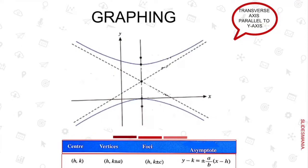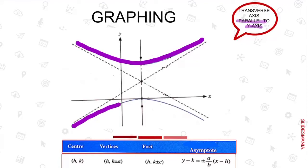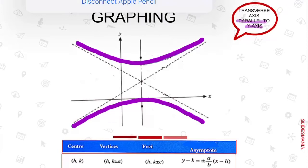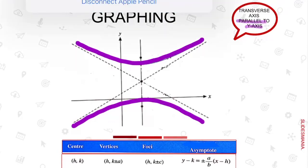Let's see the graph here. This is the graph of the hyperbola with transverse axis parallel to the y-axis. This graph will be open up and also open down. So this is the graph with your transverse axis parallel to your y-axis.